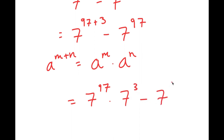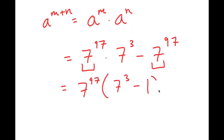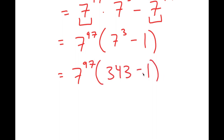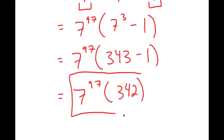And I have this minus 7 to the power of 97. Notice how both terms have 7 to the power of 97 in them, so I can factor out 7 to the power of 97. I get 7 to the power of 97 times the quantity 7 to the power of 3 minus 1. And 7 to the power of 3 is 343, so I get 343 minus 1, which equals 342. So I get 7 to the power of 97 times 342. This is my answer in simplest form.